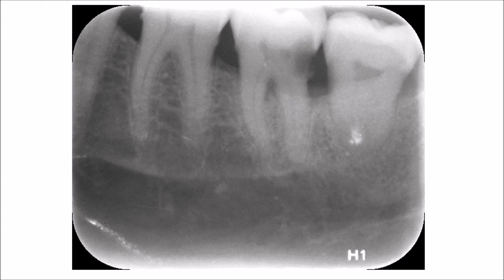This periapical radiograph of the lower molars — first, second, and third molars — shows another case of a patient suffering from periodontal disease, with moderate horizontal bone loss and bifurcation involvement of the lower second molar.